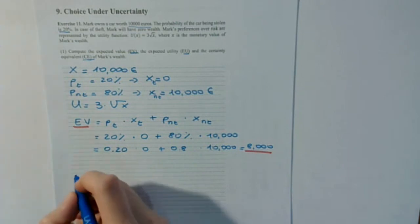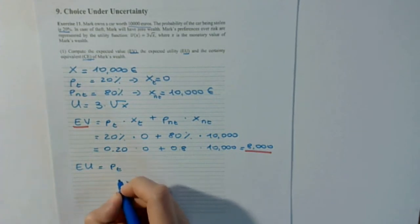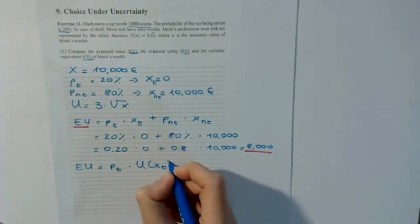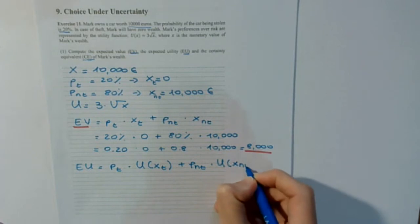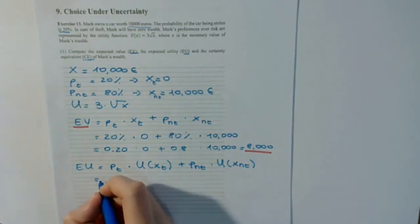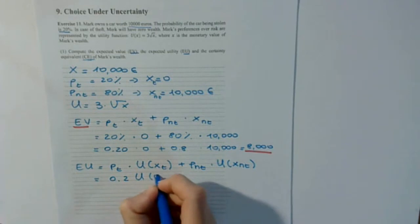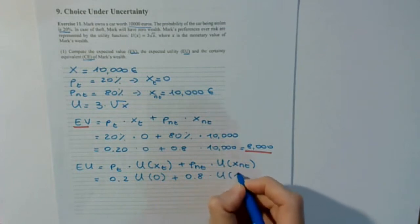Now the expected utility. The expected utility is the utility that on average I expect to receive from participating in the lottery. We take the probability of theft times the utility given by the value of x in that case, plus the probability of no theft times the utility given by the value of x in that case. So: 0.2 times utility of 0, plus 0.8 times utility of 10,000.